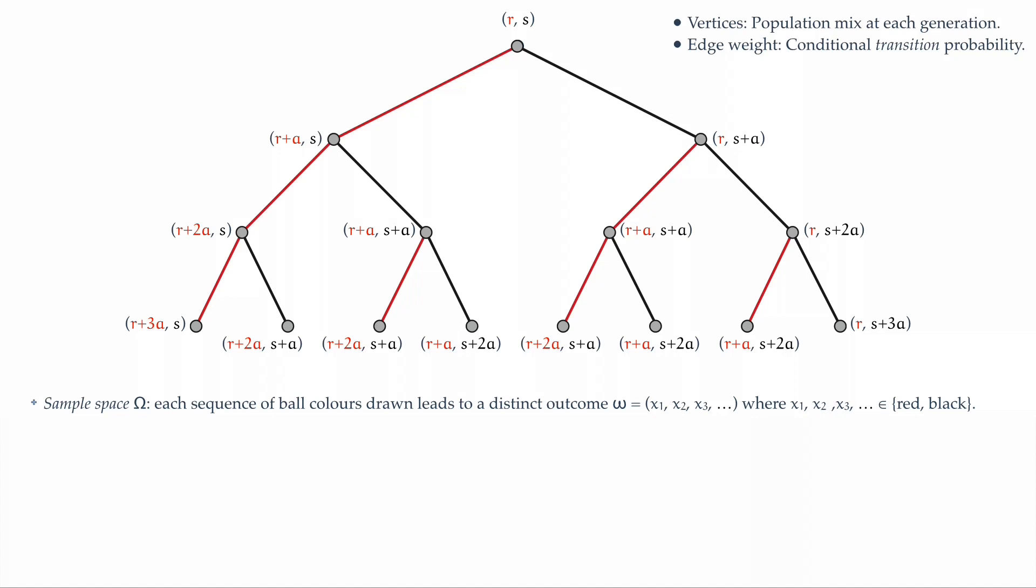And therefore, the sample points can be thought of as sequences of reds and blacks, and all possible such sequences constitute the sample space.